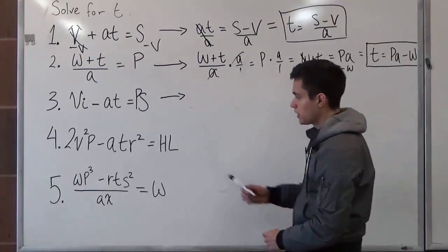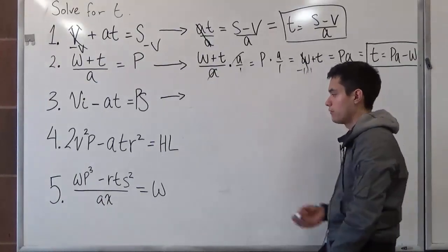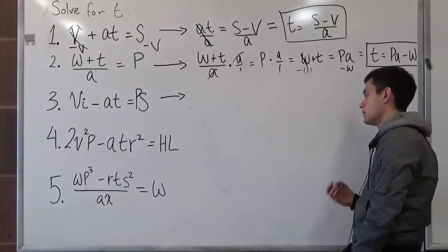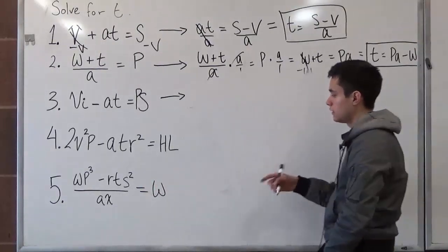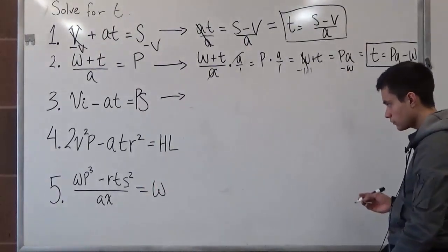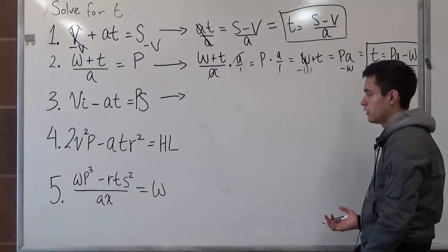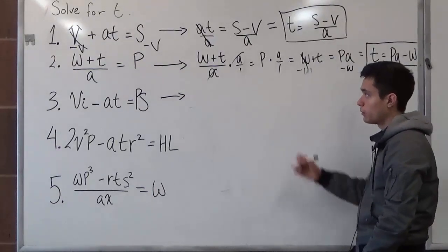So as you can see, we have wp to the third power minus r times t times s to the second power over a times x is equal to w. Let this not be a problem. We'll just apply the same concept for what we did for number 2.